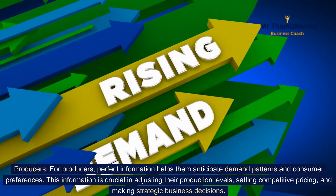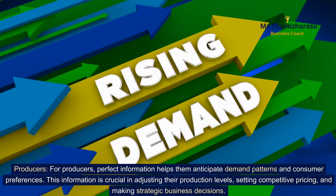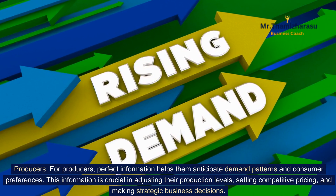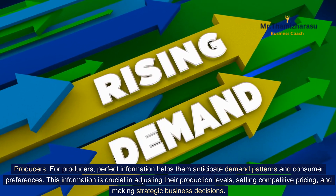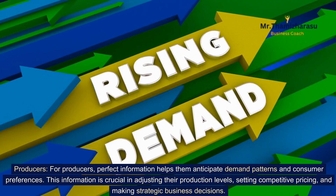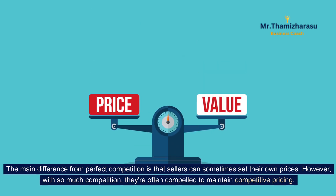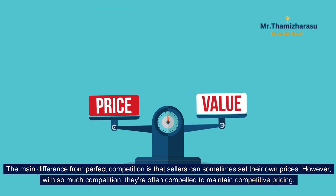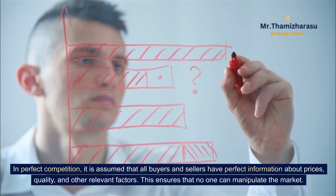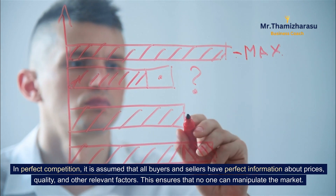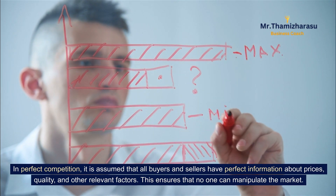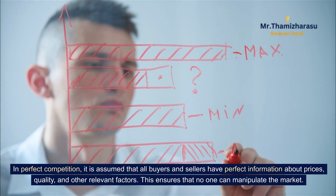This also means that businesses can't take advantage of consumers by charging exorbitant prices or delivering substandard products. For producers, perfect information helps them anticipate demand patterns and consumer preferences. This information is crucial in adjusting their production levels, setting competitive pricing, and making strategic business decisions. With so much competition, sellers are often compelled to maintain competitive pricing. In perfect competition, it is assumed that all buyers and sellers have perfect information about prices, quality, and other relevant factors, ensuring that no one can manipulate the market.